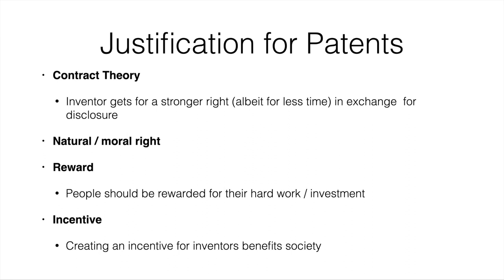But as a society, we lose when useful inventions are not dispersed and used as widely as possible. So a patent is granted to an inventor in exchange for disclosure of the invention. Something that would have been a secret is now out there to be exploited by everyone. There is a time delay from when the invention is disclosed to when it's free to be used by anyone, but in the grand scheme of things that's not very long. And if the invention is valuable enough, people will license the right to use it from the inventor.